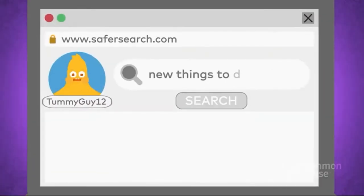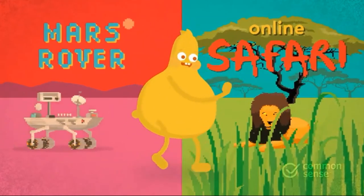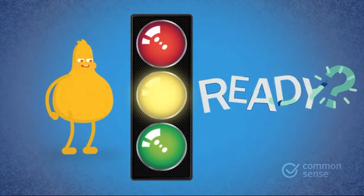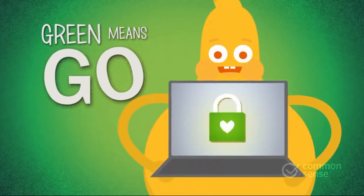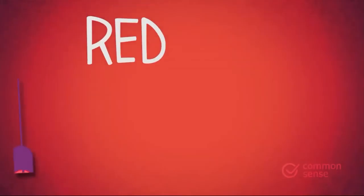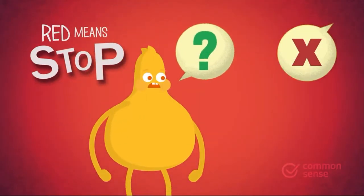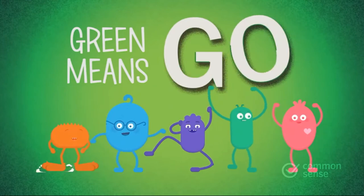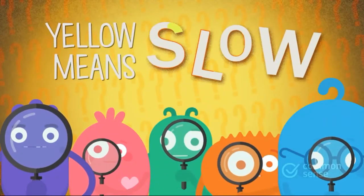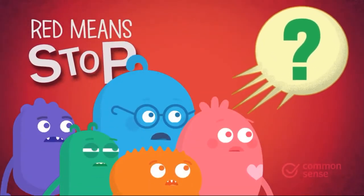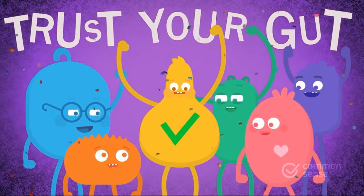We go online to find new things to do and see — the internet traffic light shows where we need to be. Green means go to sites we trust. Yellow means slow — being safe is a must. Red means stop, ask if it's okay. Trust your gut to go the right way.